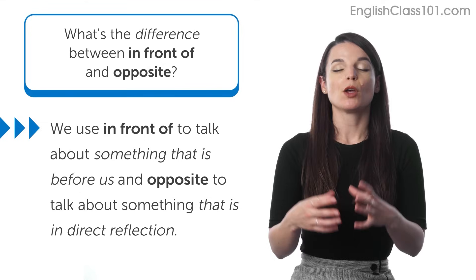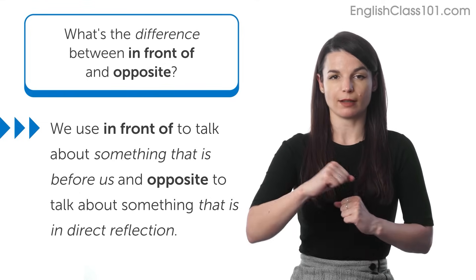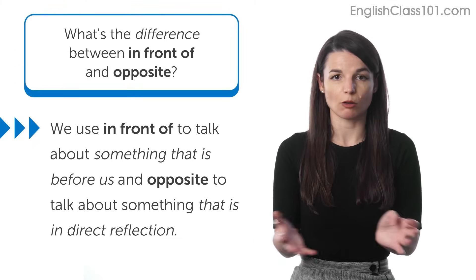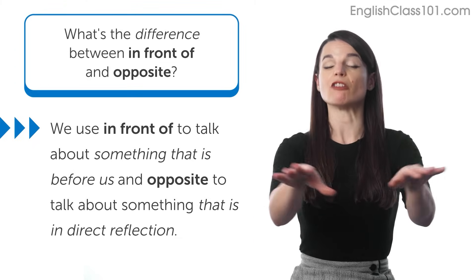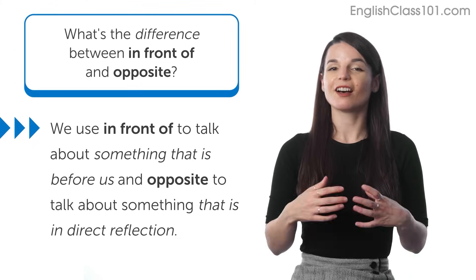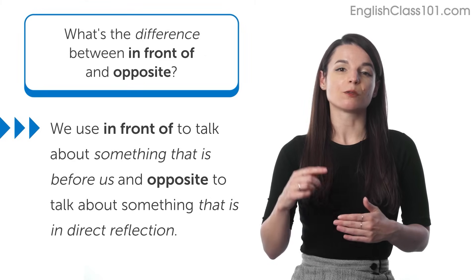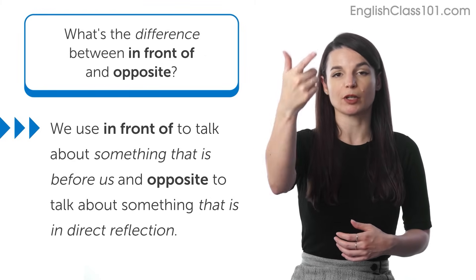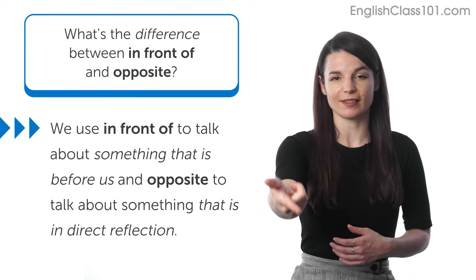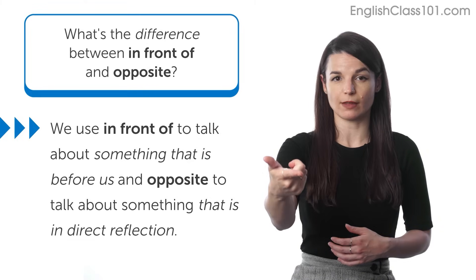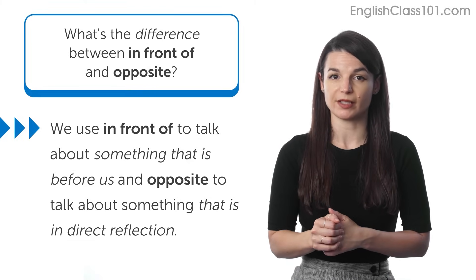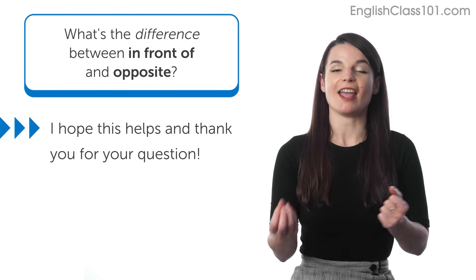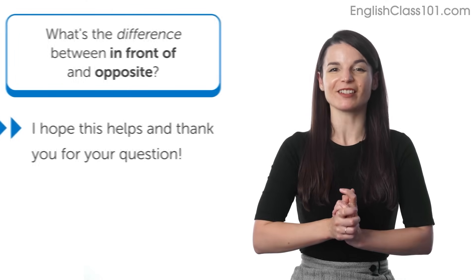So in sum, we can use in front of to talk about something that is kind of before us, anything that is before us that we can kind of see or that we can interact with. That thing is in front of us. That's our position. On the other hand, opposite is used when there's kind of a reflection happening. So one person is here, one person is there. One house is here, one house is there. They're kind of equal sorts of things. This is how we use opposite to talk about position. So I hope that this helped you understand the difference between in front of and opposite. Thanks so much for sending this question along.